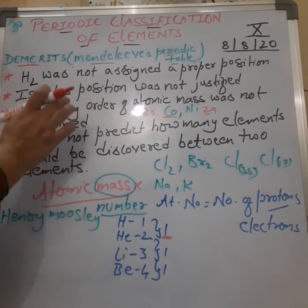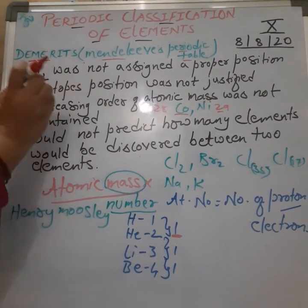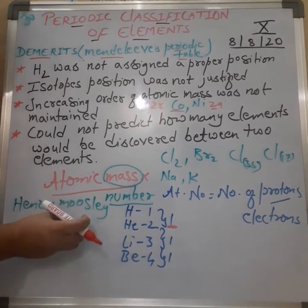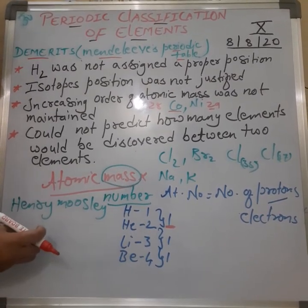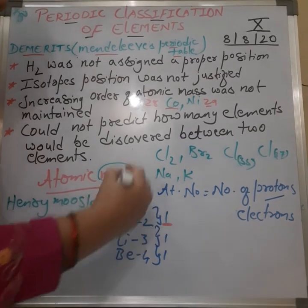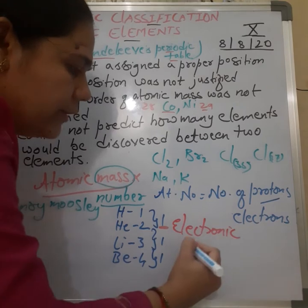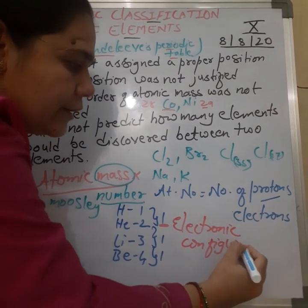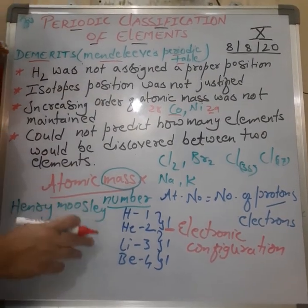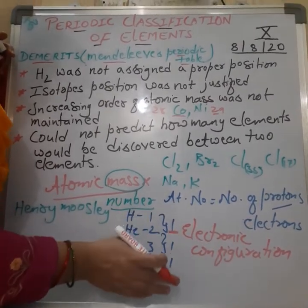When we talk about atomic number, we are talking about the arrangement of electrons, which leads to electronic configuration — which you have also learned about in standard 9. We have designed the electronic configuration of each and every element, and based on these electronic configurations, the elements were arranged in the periodic table.